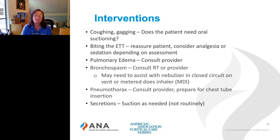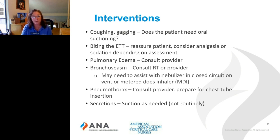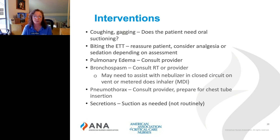If they're coughing or gagging, consider oral suctioning. If they're biting the tube, reassure the patient; if that doesn't work, try analgesia, then sedation. For pulmonary edema, consult your provider. For bronchospasm, consult your RT or provider — the patient may have a PRN bronchodilator order, and you may need to assist with a nebulizer in a closed circuit or a metered-dose inhaler. If you suspect a pneumothorax, consult the provider and prepare for chest tube insertion, making sure you know where the chest tube supplies are on your unit.